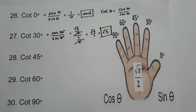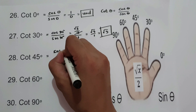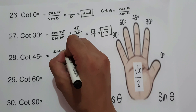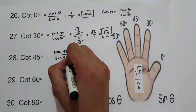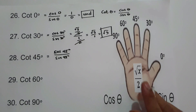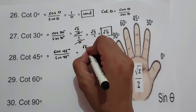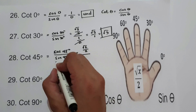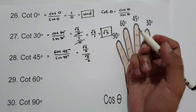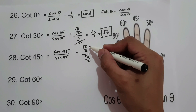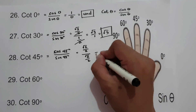For cotangent 45°, that is cosine 45° over sine 45°. Both are square root of 2 over 2, so square root of 2 over 2 divided by square root of 2 over 2 equals 1. Cotangent 45° is 1.